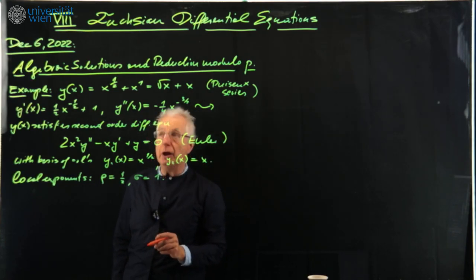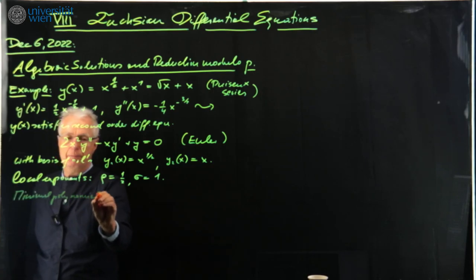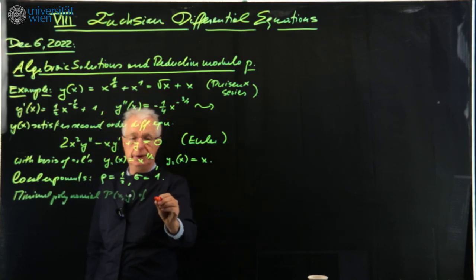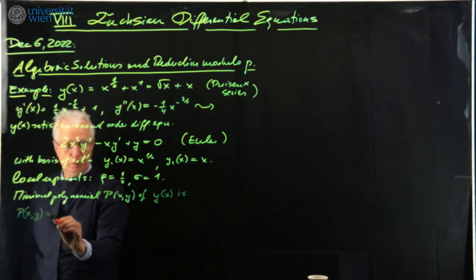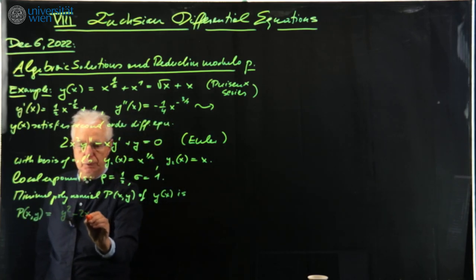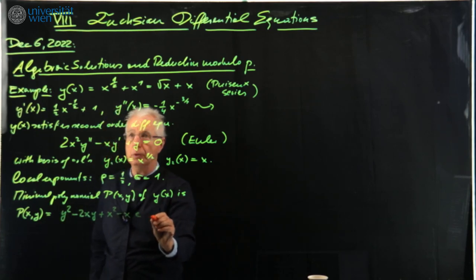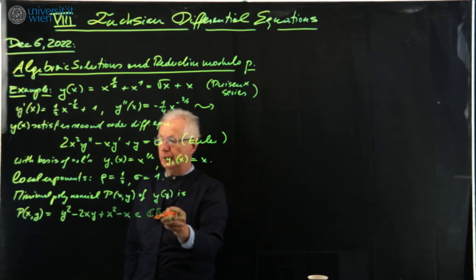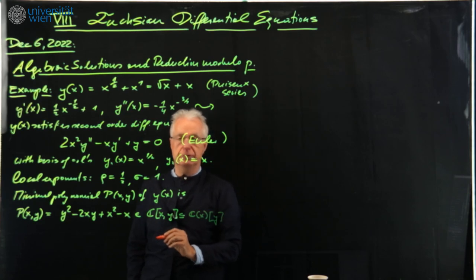The minimal polynomial of our y(x) — denoted P(x, y) — is not too hard to compute: P(x, y) = y² - 2xy + x² - x. We consider this as a polynomial in y with coefficients rational functions in the function field of x.